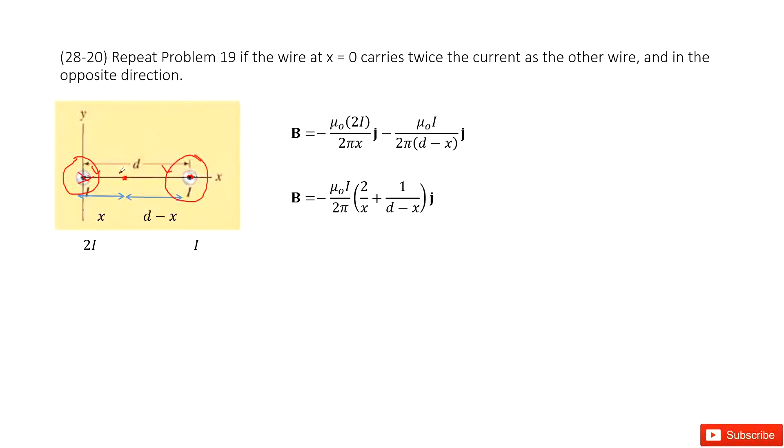Agree? So at this certain point, the magnetic field for wire 1 and wire 2 are negative. Both of them are negative. So we write negative there.